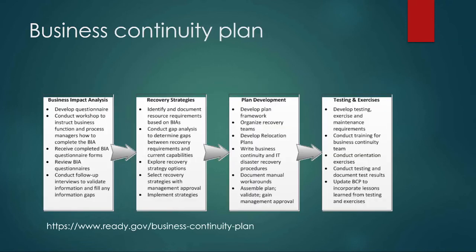Then we have to look at our business continuity plan. A business continuity plan is basically figuring out what is going to be happening with our business. The first thing we do is a business impact analysis — there are different questionnaires to figure out the impact of different disasters. We have different recovery strategies based on different scenarios: we've lost a server, we've lost five servers, we've lost our data warehouse. We also want to do gap analysis to look at the gaps between recovery requirements and our current capabilities, making sure we have as few gaps as possible and workarounds for everything.